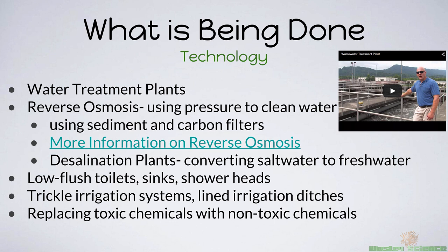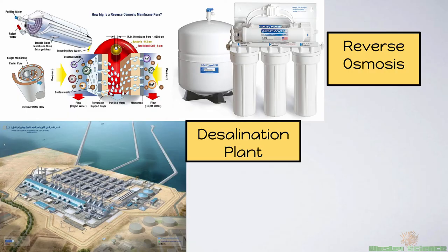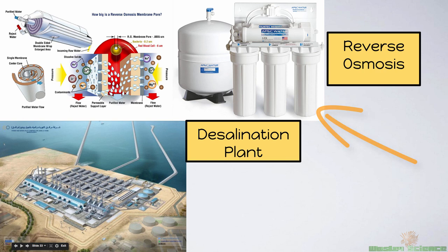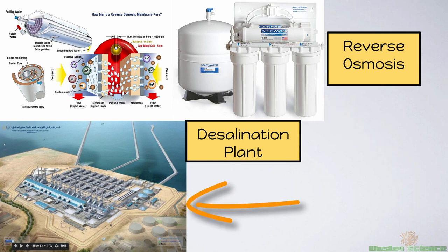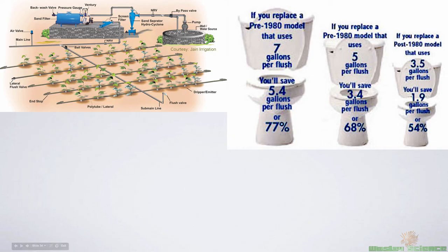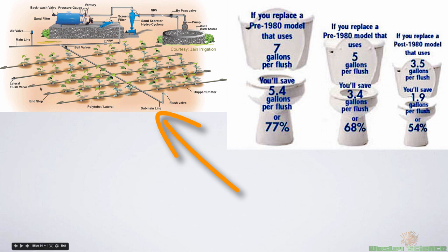We also have low-flush toilets, sinks that don't use as much water, and showerheads that don't release as much water. In terms of farming, they use something called trickle irrigation systems — an irrigation system lined with ditches that sprays water directly to the plants rather than all over the entire field. And we can simply replace toxic chemicals like pesticides with non-toxic chemicals, so the toxins don't get into the water.